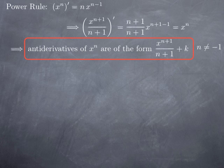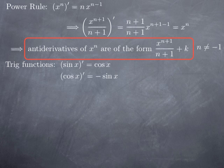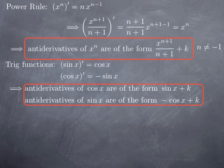Moving to other formulas: the derivative of sine x is cosine x, and the derivative of cosine x is negative sine x. In terms of antiderivatives, the antiderivatives of cosine x are of the form sine x plus k, because the derivative of sine x is cosine x. And antiderivatives of sine x are of the form negative cosine x plus k — we need the negative because differentiating cosine gives the opposite of sine x, so we multiply by negative 1 to get a derivative equal to sine x.